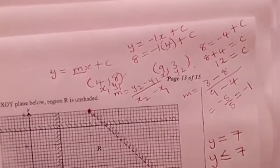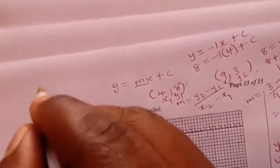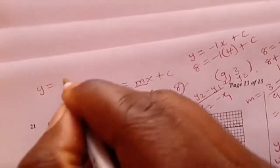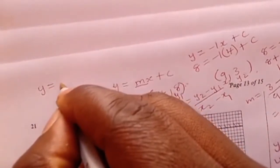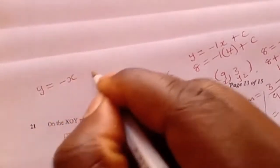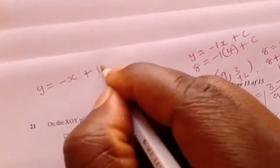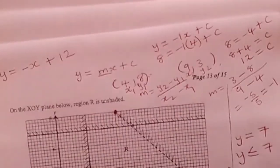Substitute 8 on y and 4 on x — which is the corresponding value of x when y is 8 — then plus c. You come out with 8 equals minus 4 plus c. Move minus 4 to the left side, you get plus 4, which equals 8 plus 4, which equals c. 8 plus 4 gives you 12. Hence, 12 equals c. So the complete equation of the line is y equals minus x plus 12.